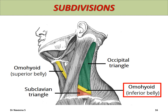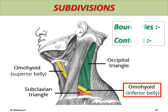The inferior belly lies 2.5 cm above the clavicle behind the sternocleidomastoid muscle. It is suspended from the clavicle by the omohyoid fascia, which may be derived from the clavipectoral fascia below or the investing layer of deep cervical fascia. The omohyoid fascia lies deep to the investing layer and supports the roof of the subclavian triangle. Each subdivision of the posterior triangle should be studied with its boundaries and contents in detail.